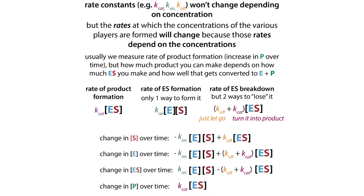The velocity we observe depends on those rate constants — and those rate constants are what we talk about with our Kcat. So our Kcat is a rate constant, whereas velocity is a rate. Rate versus rate constant — it's really important to keep that distinction in mind.